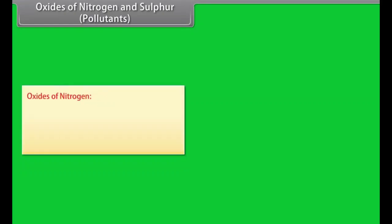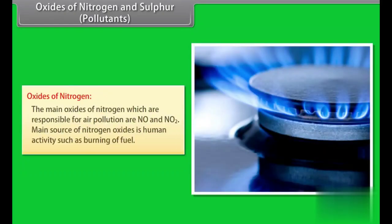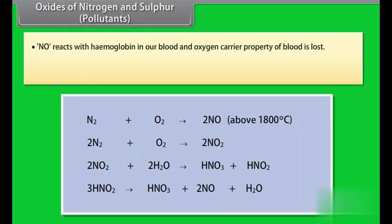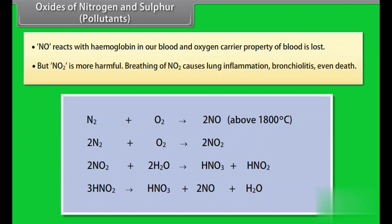Oxides of nitrogen and sulfur. Pollutants: Oxides of nitrogen. The main oxides of nitrogen which are responsible for air pollution are NO and NO2. Main source of nitrogen oxides is human activity such as burning of fuel. NO reacts with hemoglobin in our blood and oxygen carrier property of blood is lost. But NO2 is more harmful. Breathing of NO2 causes lung inflammation, bronchiolitis, even death.